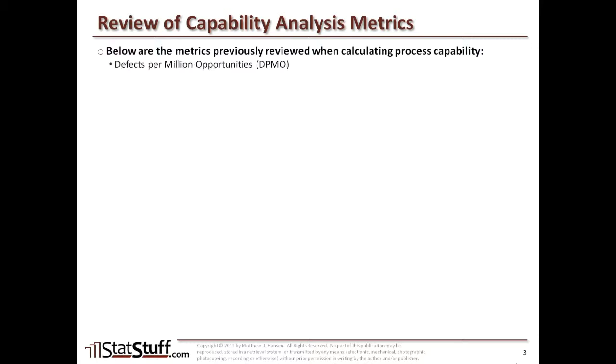Let's also quickly review some of those capability analysis metrics. Let's first go into the DPMO, which is the defects per million opportunities. That would reflect the count of the number of defects that are expected to occur for every 1 million opportunities that run through the process. We calculate that by taking the total number of defects that we've seen, and we divide that by the total number of units times the total opportunities per unit, and that gives us an overall percentage of what's defective. We multiply that times 1 million to figure out the number of defects per million opportunities.